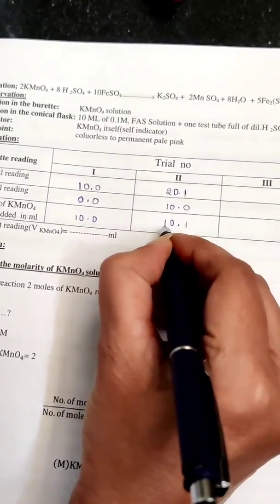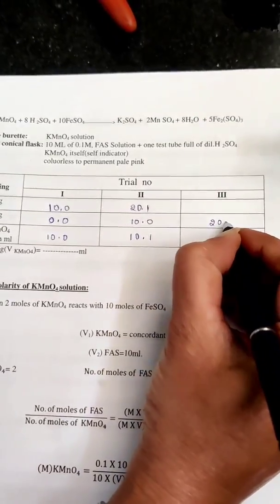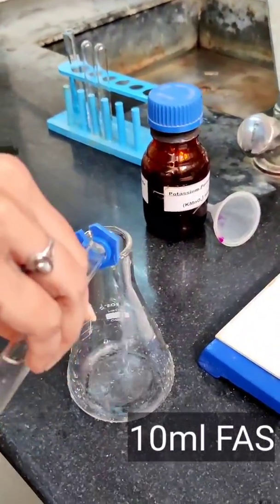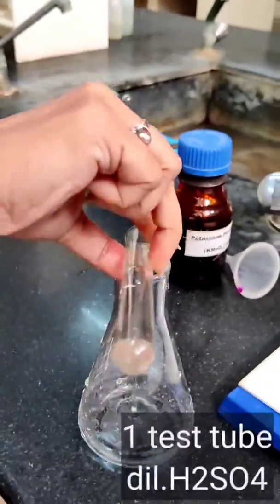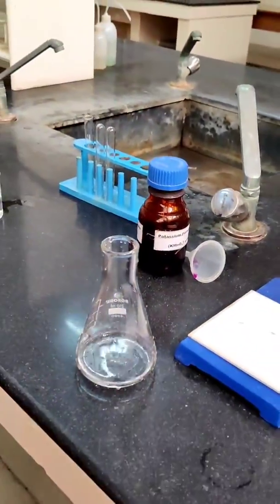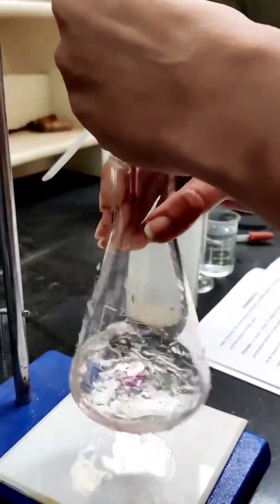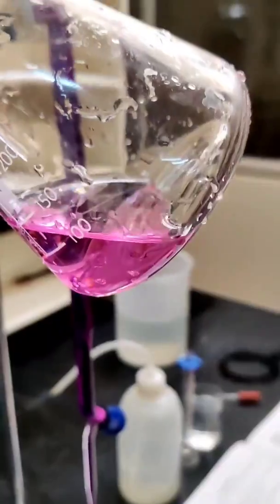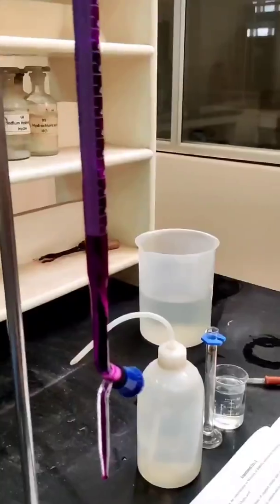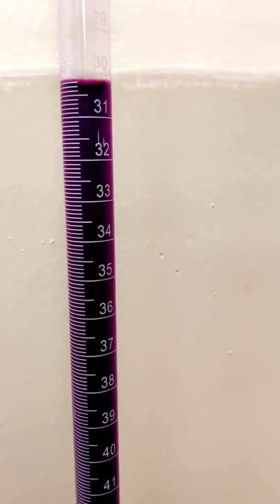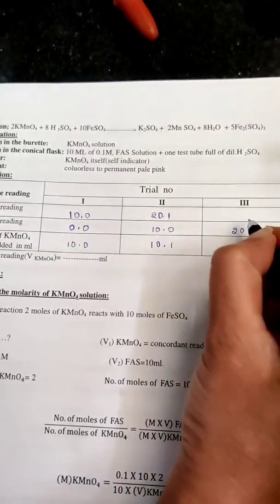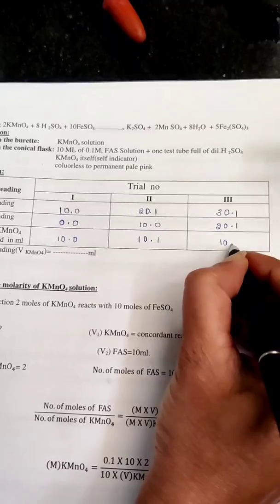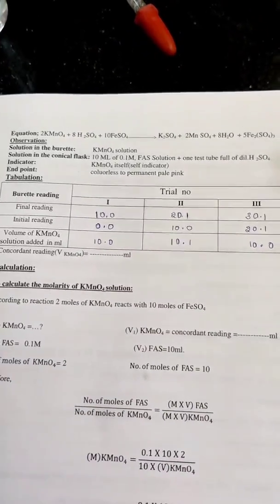Do the subtraction to get the final reading. The second final reading will be the initial reading for the third trial. Again, I have taken 10 ml of FAS and one test tube of dilute sulphuric acid. I got a pale pink color. Note down the reading. After the third trial, take a concordant reading.